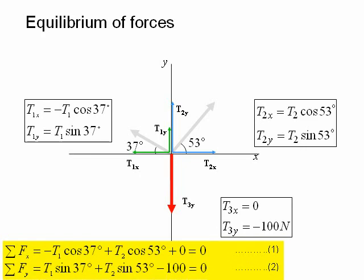And the sum of all the y components must be equal to zero. The sum of Fy is equal to T1 sin 37 degrees plus T2 sin 53 degrees minus 100, which again must equal zero. That's equation 2.